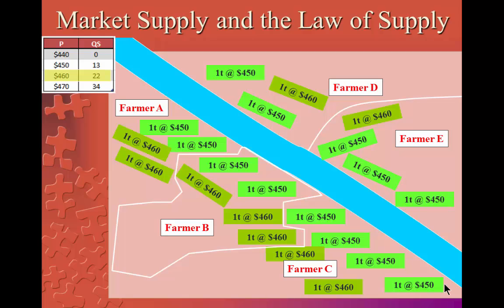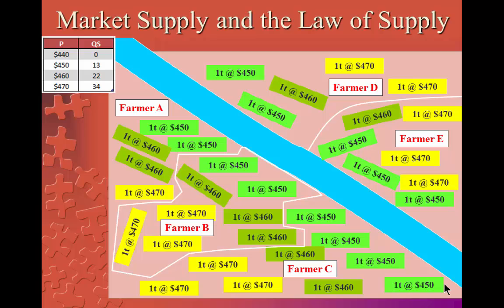Still, with a price of $460, farmers are not able to cover the costs on the fields that are far away from the river. Consequently, they would not produce on these fields. However, if the price increases to $470, the farmers would produce on those fields as well. Supply would increase by 12 to a total of 34.